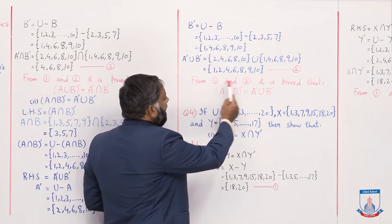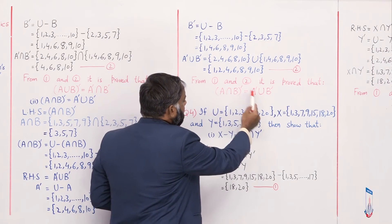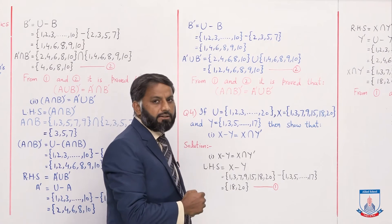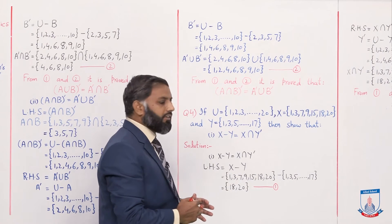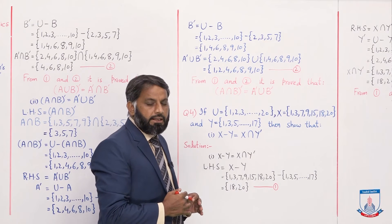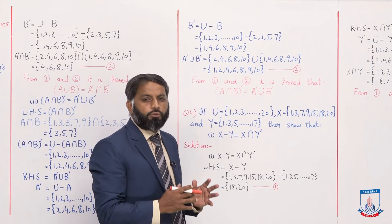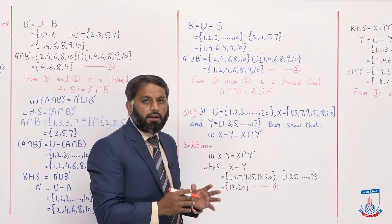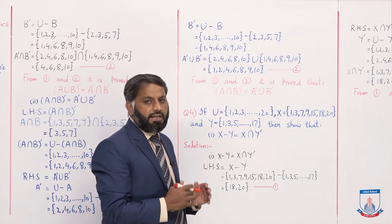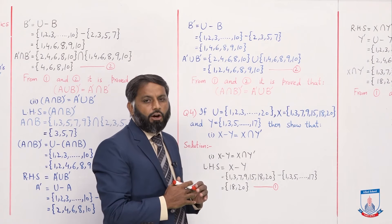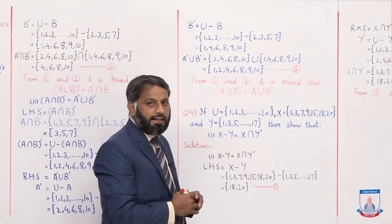From equation 1 and equation 2, it is proved that (A∩B)' = A'∪B'. Question number 3 is complete. When in the exam the question asks to verify De Morgan's Laws, you need to prove both laws. And the laws should be memorized — they may not be written in the question, so you must know them by memory.